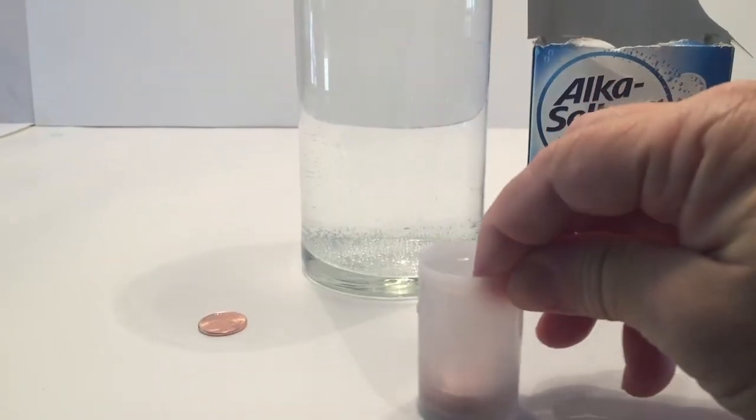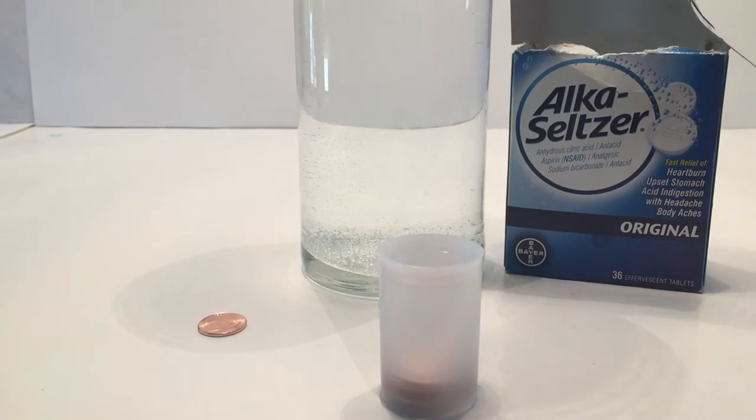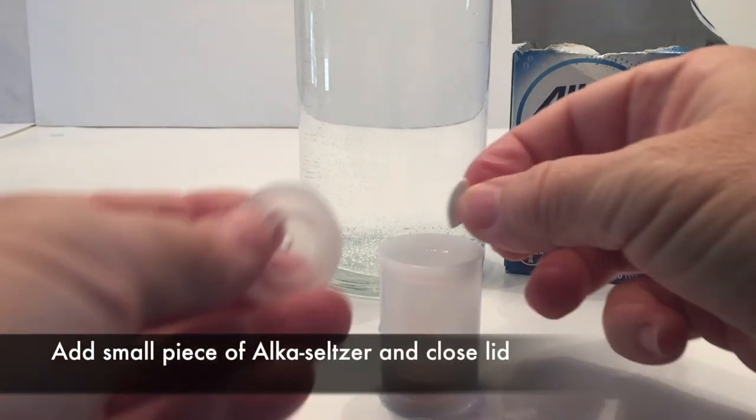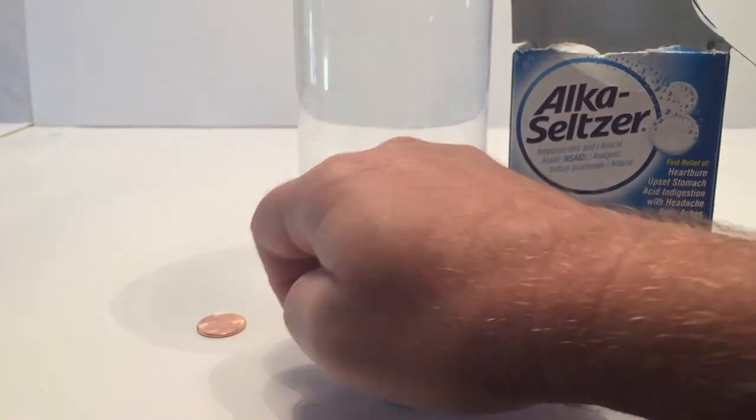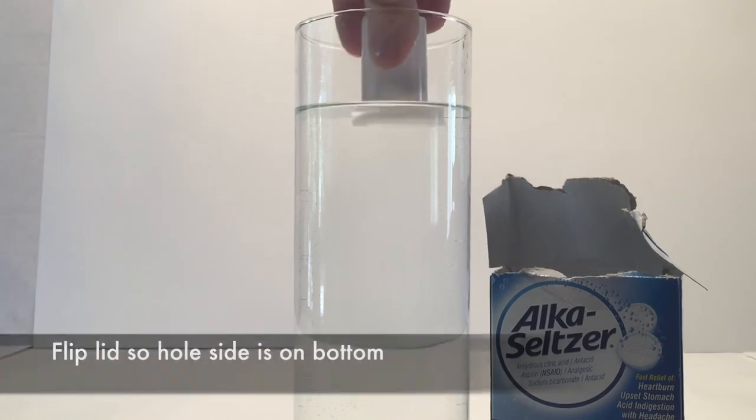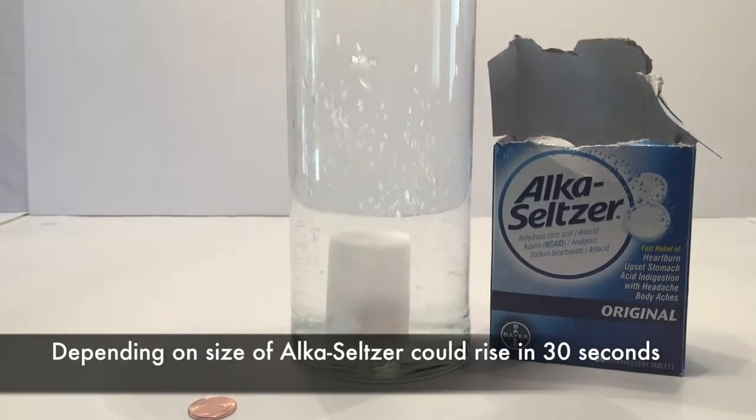And then from there, I'm going to take my Alka-Seltzer, which I already own. Believe it or not, I take a very small piece, put it in, and clamp the lid down. I've never used Alka-Seltzer for myself, which is intended. Flip the canister upside down and let it go, and it'll sink to the bottom.